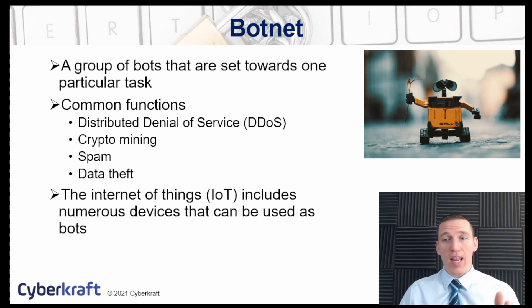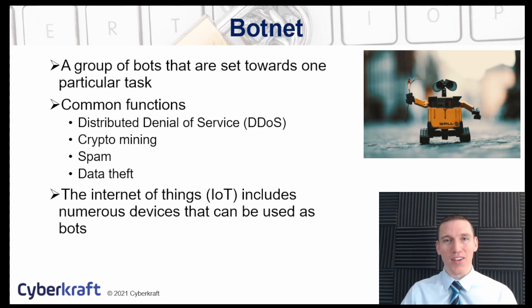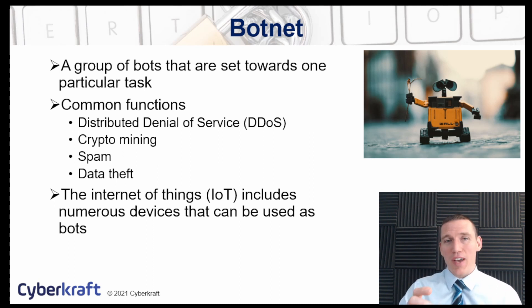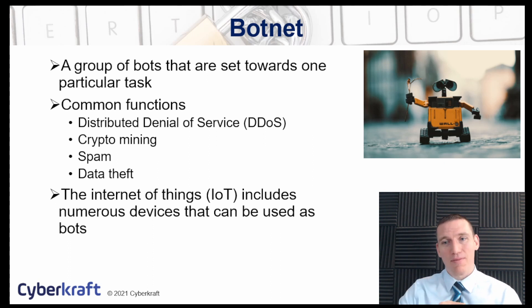Internet of Things devices are usually embedded systems. A smart refrigerator, for example, doesn't have security in mind — it's usually just trying to tell you how cold your food is. Those devices might not have a robust firewall, which makes them very easy to be recruited as part of a botnet.